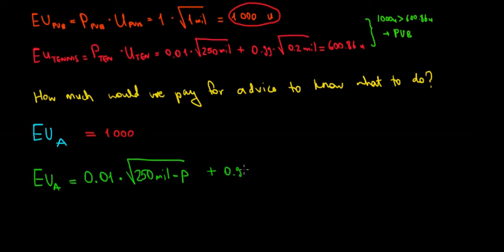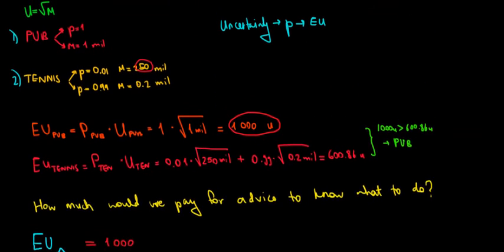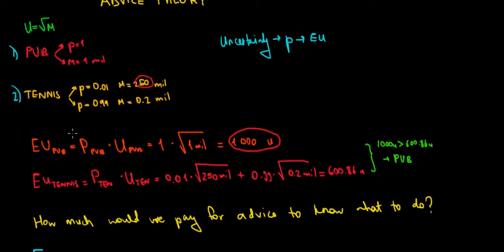Plus 0.99, which is the 99% probability that we fail. But here comes the trick. If we fail and the advisor tells us that we are going to fail, then we would go for the certain option, because the certain option has a better outcome for us. Let's have a look over here again.